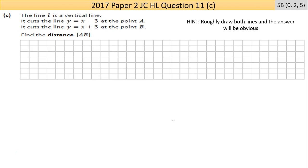So that's part b. Now part c here says the line L is a vertical line, so it goes straight up. It cuts the line y equals x minus 3 at the point A. It cuts the line y equals x plus 3 at the point B. Find the distance AB. Now first, draw that. Now they're both the same slope, so they're parallel. They have a slope of 1, so they're going up 1 unit for every 1 they go across. This one starts at negative 3, so somewhere down here. I'm going to kind of guesstimate it, something like that. This one starts at plus 3, so somewhere up here. I'm kind of guesstimating again, something like that. They're parallel.